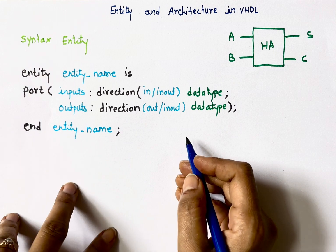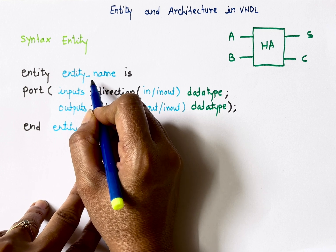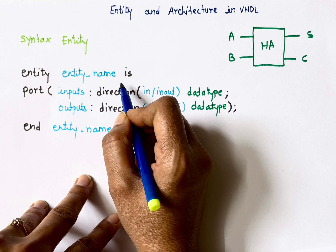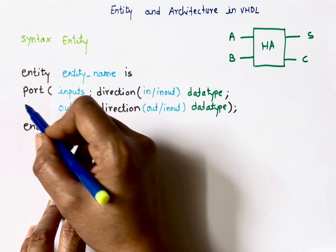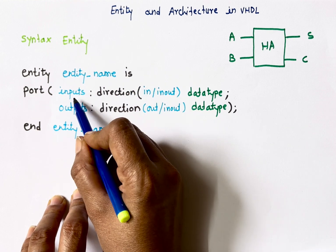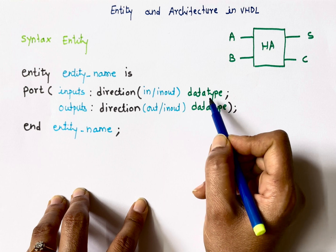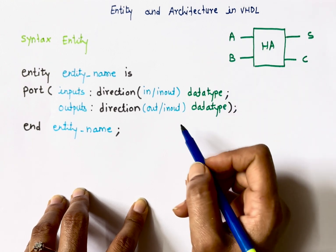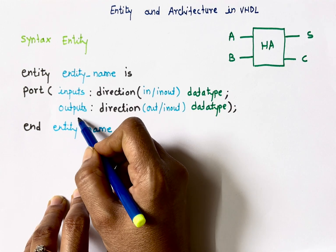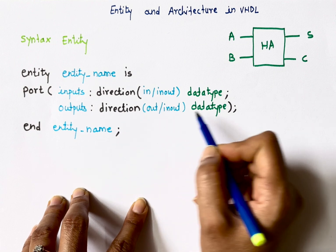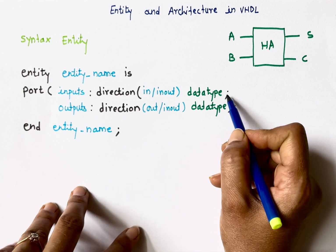This is the syntax for entity. The first word is 'entity', followed by the entity name — any name you can assign, but it should start with an alphabet, can be followed by numbers, and only one special character is allowed: underscore. Then 'is port', where we declare inputs and outputs with their direction (in, out, or inout) and data type (integer, standard_logic, bit, or boolean). After every line, a semicolon is mandatory.